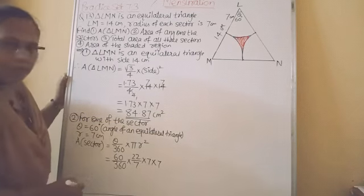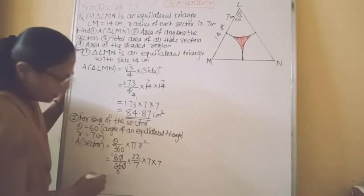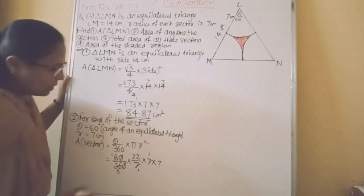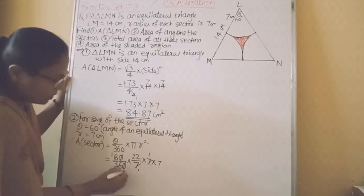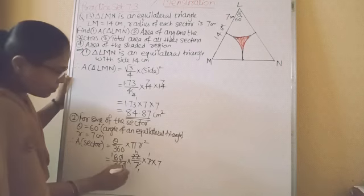Now, let us divide. Cancel 0, 0. 6, 1 the 6. 6, 6 the 36. This 7 gets cancelled. 2, 3 the 6. 2, 11 the 22. So we have here 11 into 7.